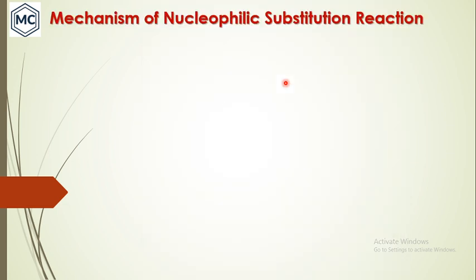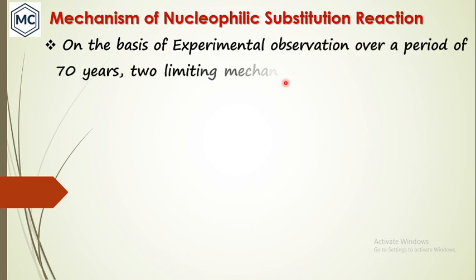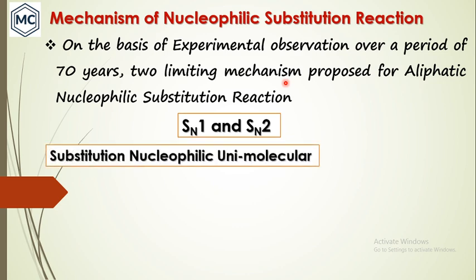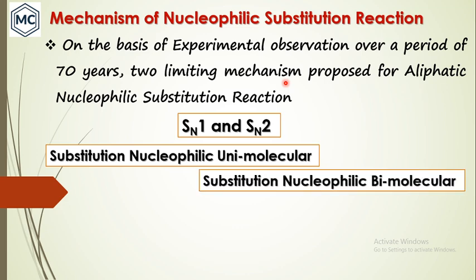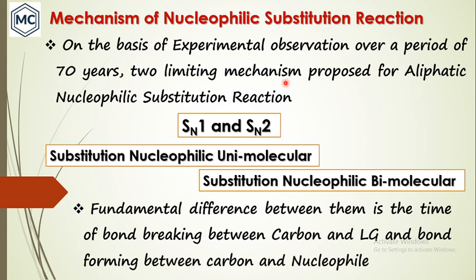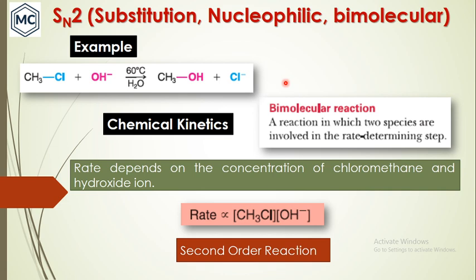So what are the mechanisms of nucleophilic substitution reaction? On the basis of experimental observation over a period of 70 years, two limiting mechanisms were proposed for aliphatic nucleophilic substitution: SN1 and SN2. SN1 means substitution nucleophilic unimolecular. SN2 means substitution nucleophilic bimolecular. The fundamental difference between these two mechanisms is the time of bond breaking between carbon and the leaving group, and the time of bond forming between carbon and the nucleophile.